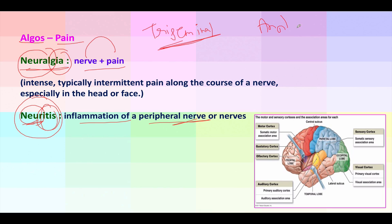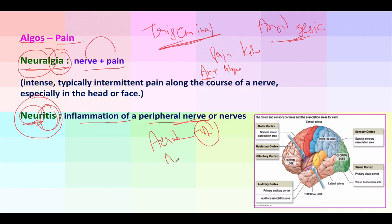What is the meaning of analgesic? Let's say you twisted a muscle playing football and want a painkiller. The word pain is algos, and prefixing 'an-' means lack of something — for example, aerobic means with oxygen, anaerobic means lack of oxygen. So analgesic means lack of pain — a painkiller. Examples include diclofenac and aspirin.